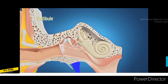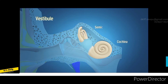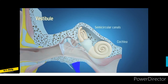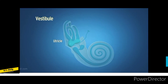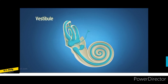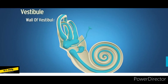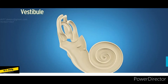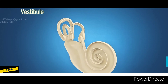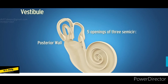The vestibule is the central part of the bony labyrinth, present between the cochlea and semicircular canals. It contains the utricle and saccule of the membranous labyrinth. The anterior wall bears an opening which communicates with the scala vestibuli of the bony cochlea. The posterior wall bears five openings of the three semicircular canals.